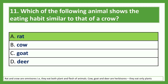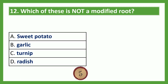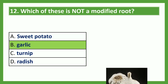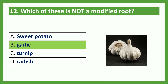Which of these is not a modified root? Option A: sweet potato; Option B: garlic; Option C: turnip; Option D: radish. The answer is garlic. Garlic is a modified stem. Sweet potato, turnip and radish are modified roots.